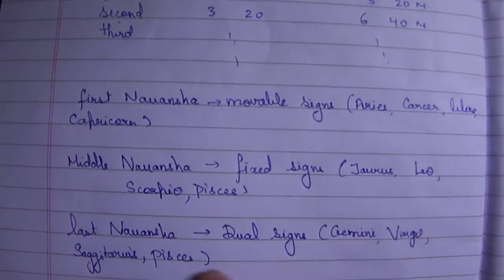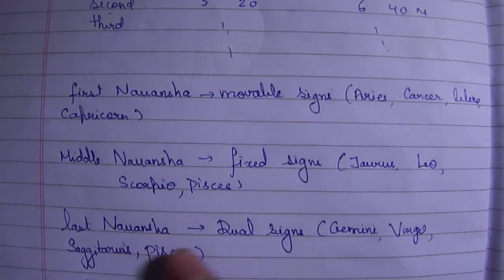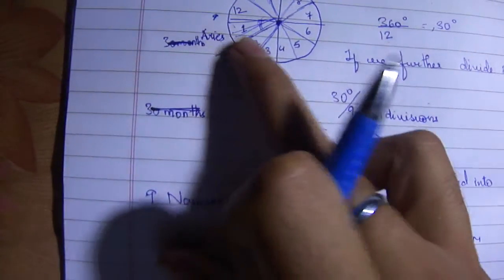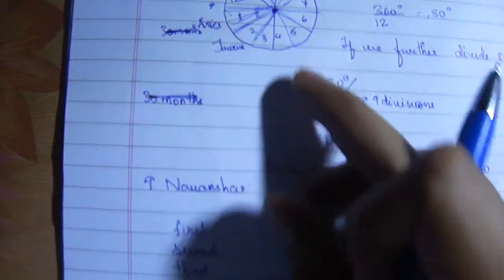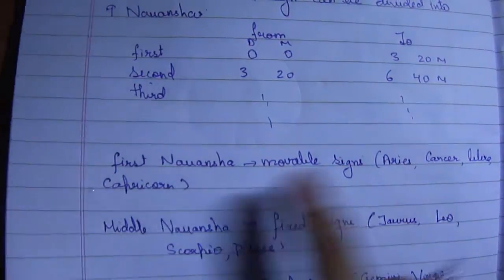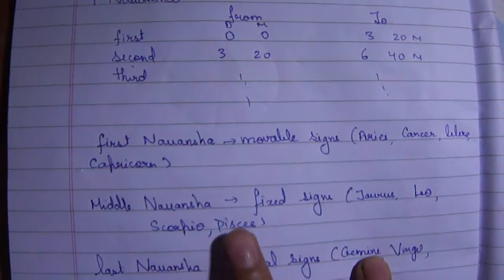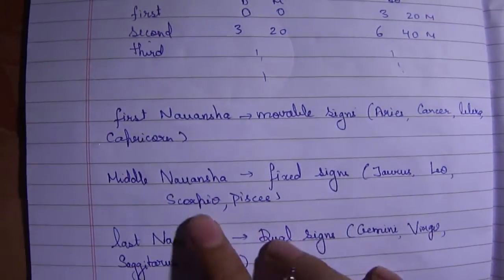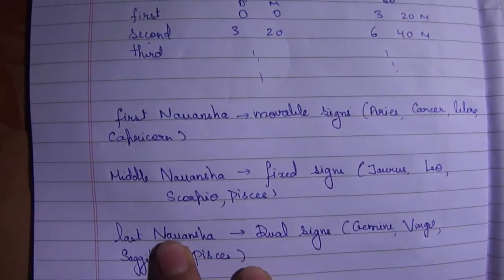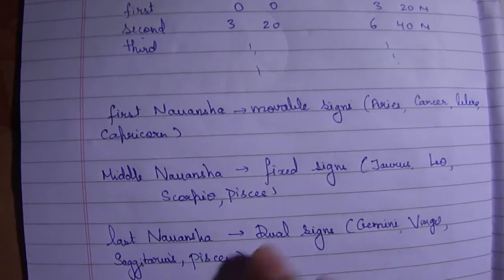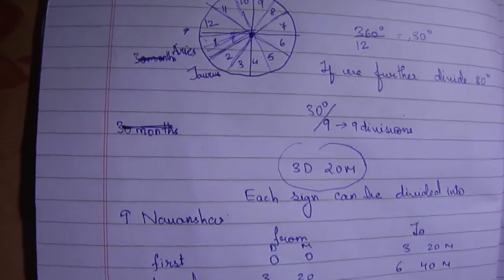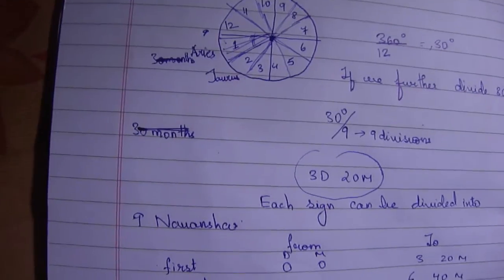Whereas the last Navamsha consists of Gemini, Virgo, Sagittarius and Pisces. So that is how a sign is further classified into nine parts, whose first four parts are these, next four parts are the second Navamsha consisting of these four signs, whereas the last Navamsha consists of these four signs. Basically we are further dividing to get into further detailing and it helps us in understanding in depth.